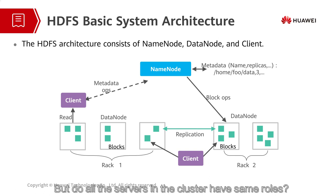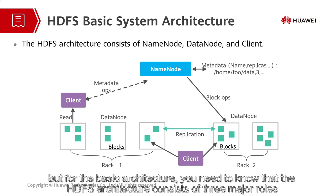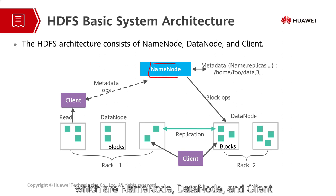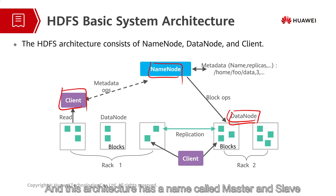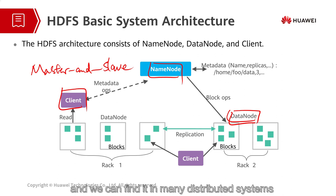But do all the servers in the cluster have the same roles? Apparently not. For the basic architecture, you need to know that the HDFS architecture consists of three major roles: name node, data node, and client. And this architecture is called master-slave architecture.